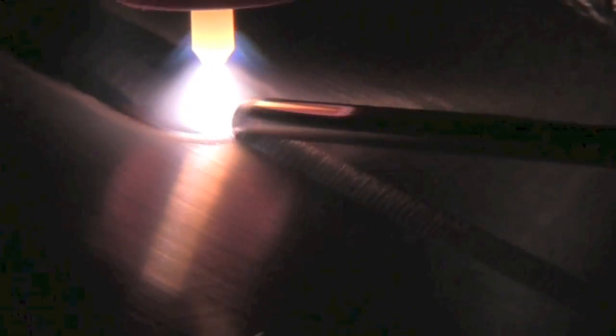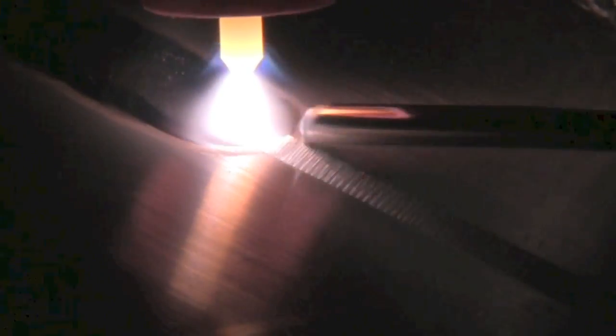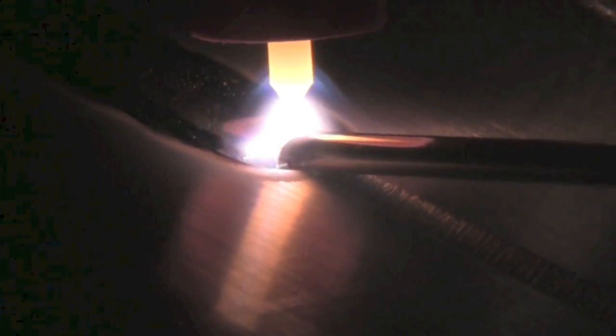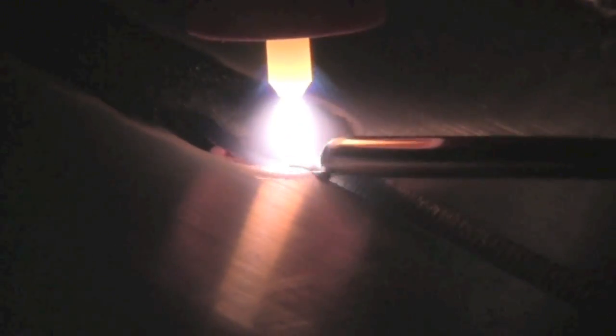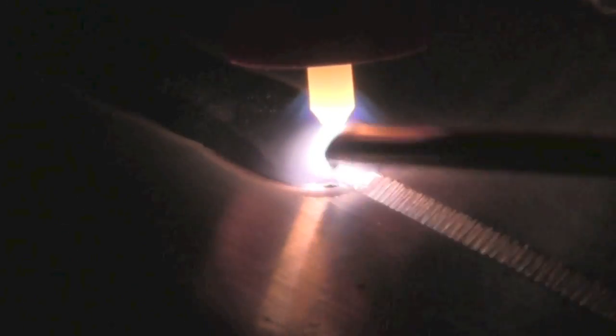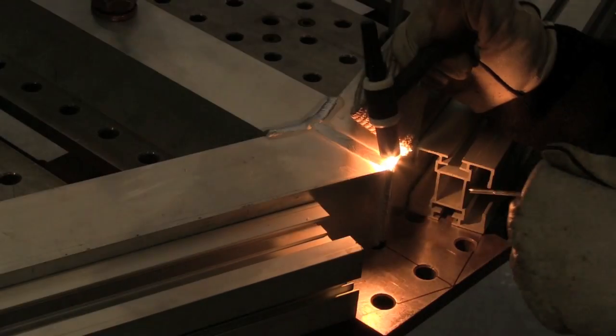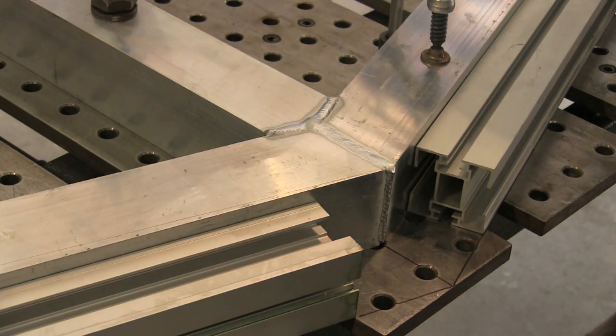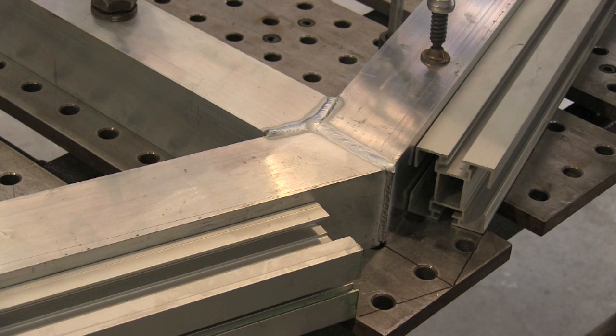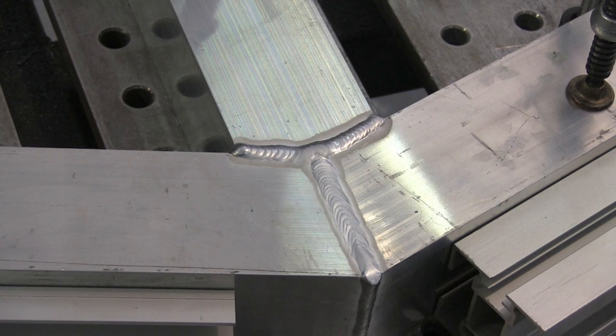So that one came out probably just about flush, maybe even slightly below flush in certain places. But we're going to do a little sanding with that flap disc anyway.